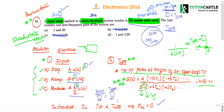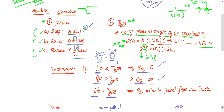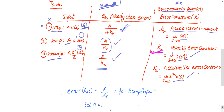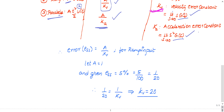Now, what is the zero frequency gain? For ramp input, the zero frequency gain is Kv. The steady state error = A/Kv. Taking A = 1 (unit ramp), the steady state error is 5% = 5/100 = 1/20. So 1/Kv = 1/20, which gives Kv = 20. The zero frequency gain is 20.